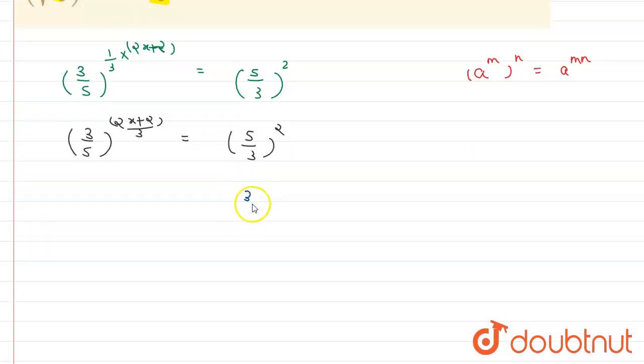We can write it as (3/5)^(-2) equals (3/5)^((2x+2)/3).